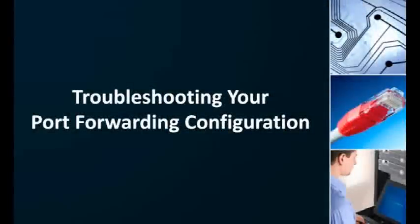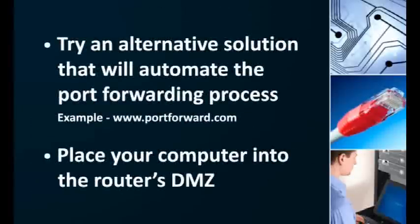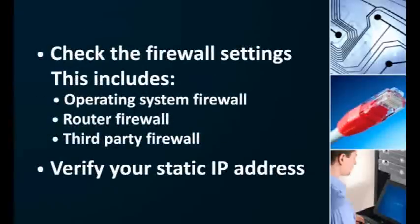Hopefully, once you've configured your router to forward ports, your application will be visible to the outside internet. If you find you are still having trouble with port forwarding, you can try an alternative such as using a program that will automate port forwarding for you, or try putting a computer onto the router's DMZ. It's also possible that port forwarding is only one of your problems — check your firewall configurations through your operating system, your router, and through any third-party security software you might have installed.